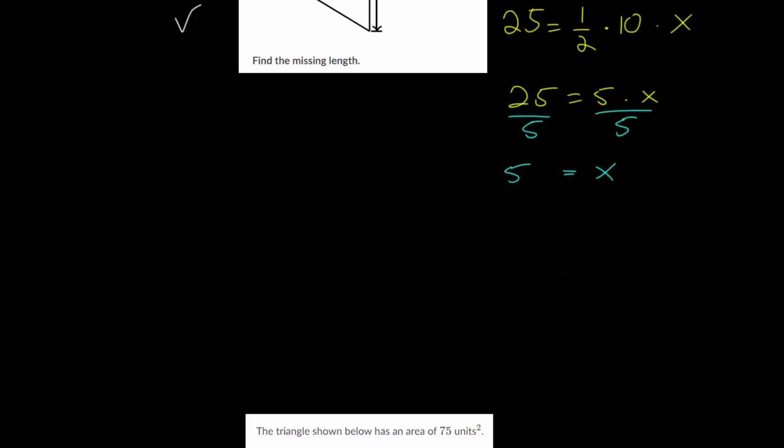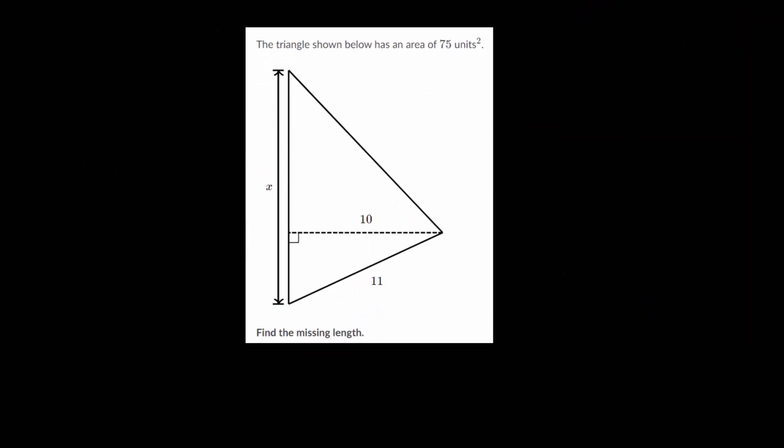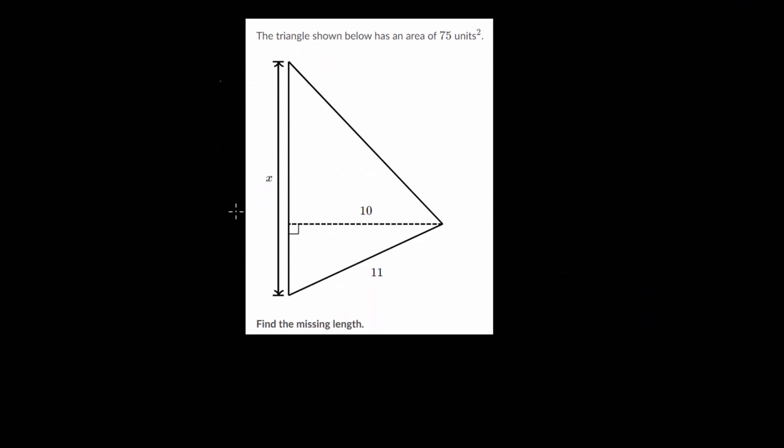Let's just do one final example problem. This one's fairly similar, but essentially the base and the height are switched. Now we are looking for the base of the triangle, and we know what the height is. Let's just write down our formula again: the area is 1/2 the base times the height.